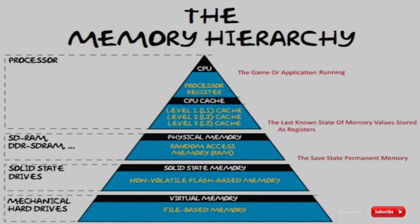Memory editing is a process which alters the value of a registered memory address within the CPU process. This means that any process being run by a system, whether it be a game console or PC, is running commands through the system CPU core and storing values in memory addresses.